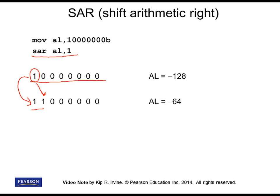I've written down the decimal values here — negative 128 — and we shifted it right one bit position. Now it's equal to negative 64. If we had filled the high bit position with a zero instead of a one, the value would not be negative 64 but instead would be 64, giving us the wrong result.